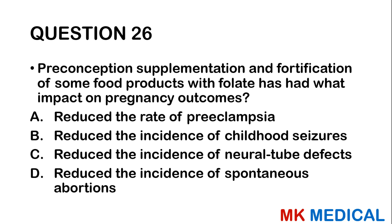Question twenty-six: Pre-conception supplementation and fortification of food products with folate has had what impact on pregnancy outcomes? A, reduced the rate of pre-eclampsia; B, reduced the incidence of childhood seizures; C, reduced the incidence of neural tube defects; D, reduced the incidence of spontaneous abortions. Folate is very essential for development of the nervous system, so it actually helps in reducing neural tube defects.